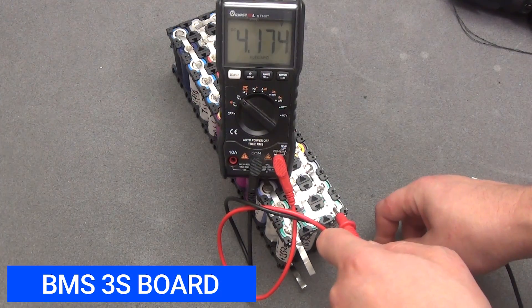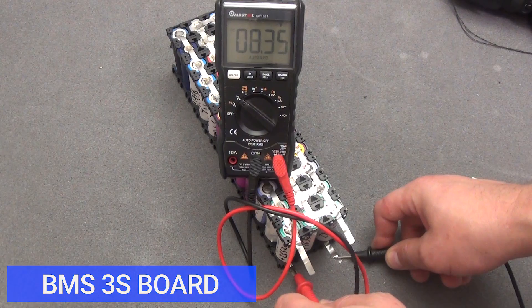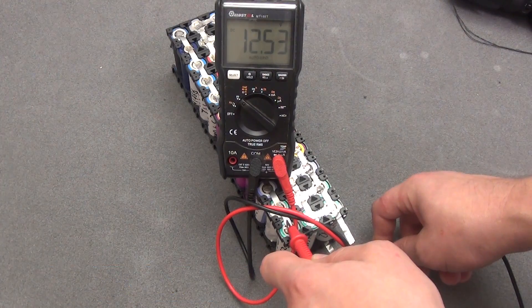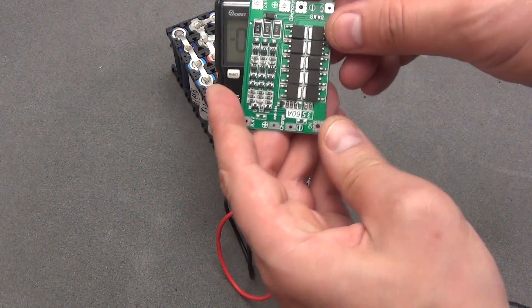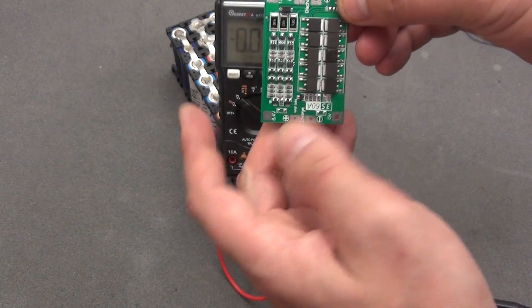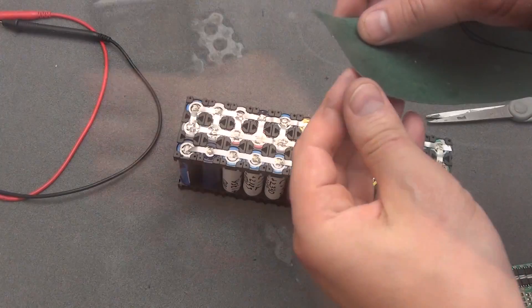Let's check. 4.17, here we will have 8.4. 12 and 5 need to be charged a little. And on the BMS board we have exactly the same. 0, 4.2, 8.4 and 12.6.